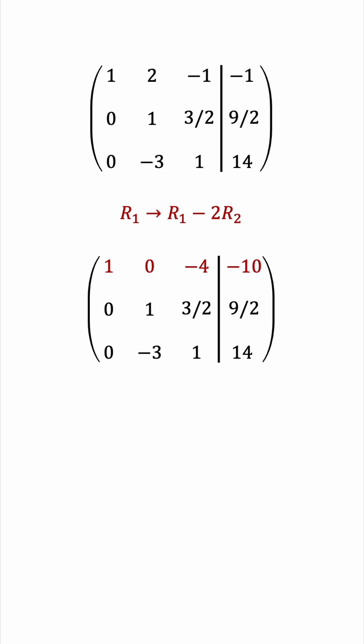To complete the second column, we now need to add 3 copies of row 2 to row 3.